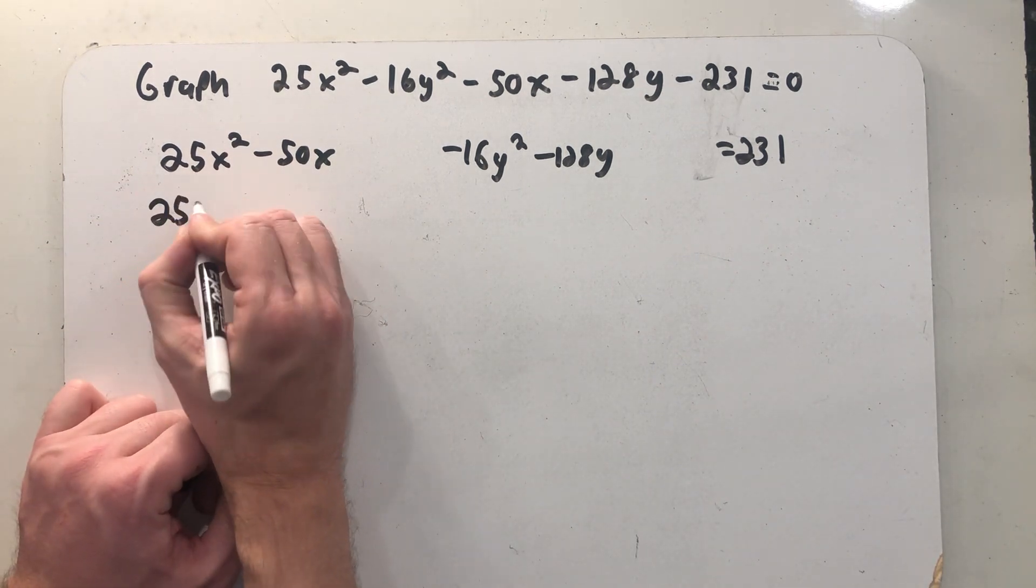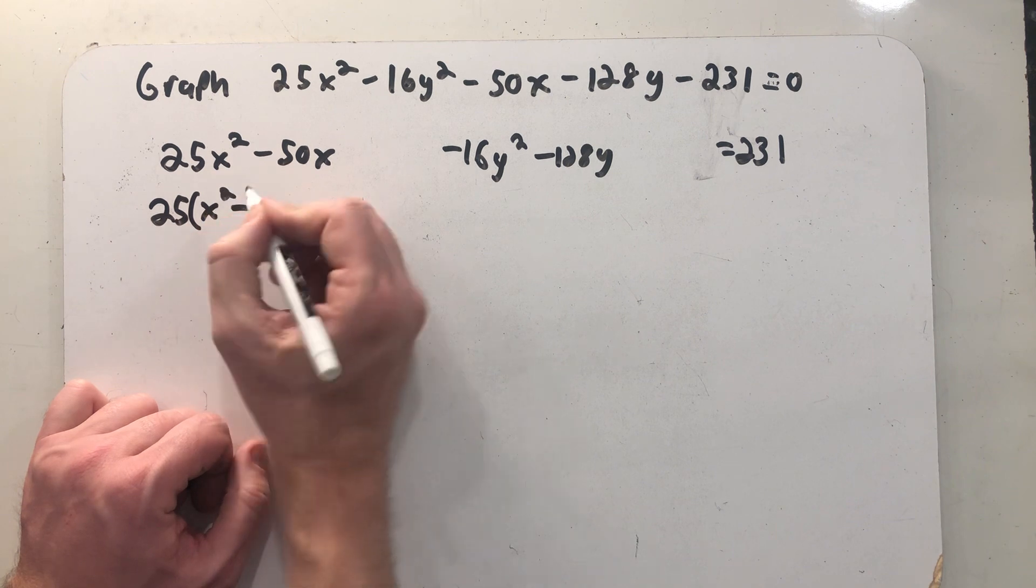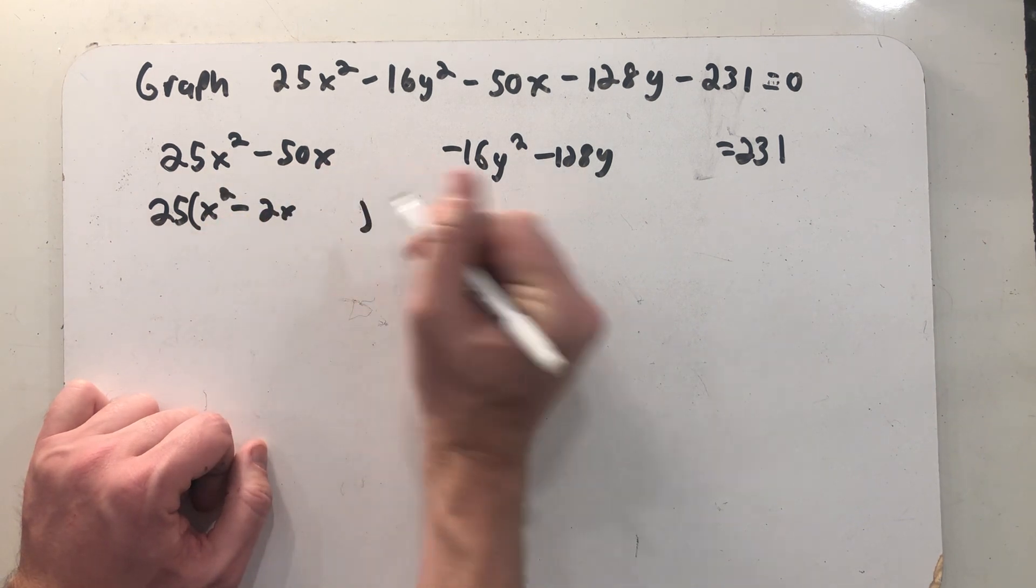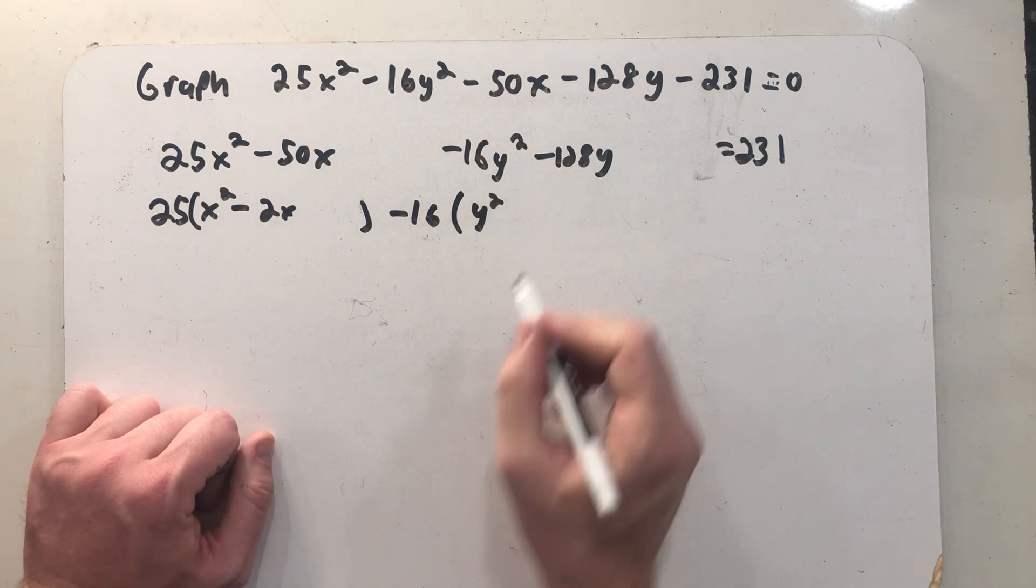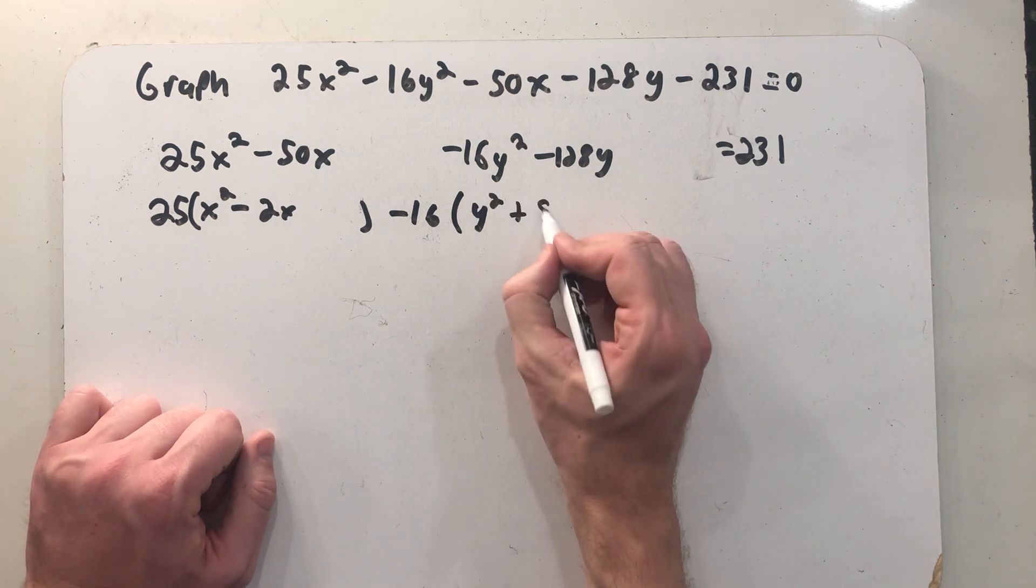Let's factor out a 25 here from the x term so that we can easily complete the square. And we'll have to factor out a minus 16 from the y. So I get a y squared and that's going to be a plus 8y.